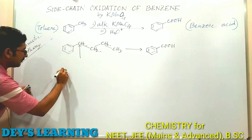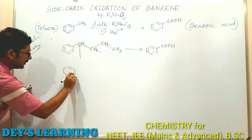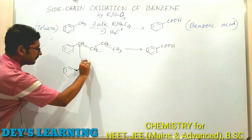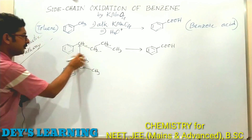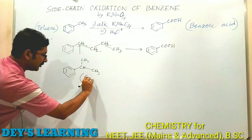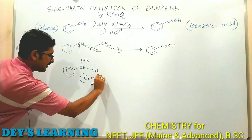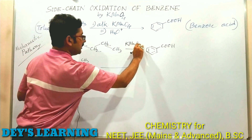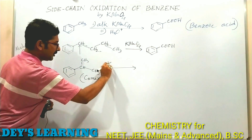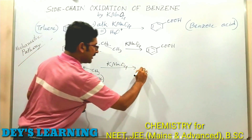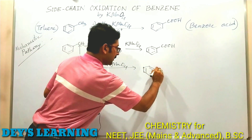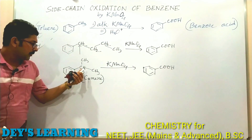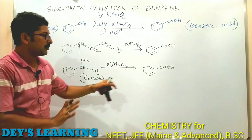Now if we have isopropylbenzene — we know this molecule is known as cumene — on oxidation by KMnO₄, the benzylic C–H bond is broken and the side chain is oxidized. Cumene on treatment with KMnO₄ will again produce benzoic acid.